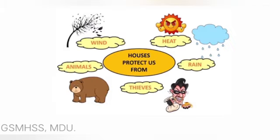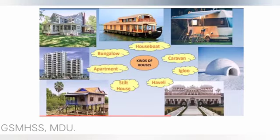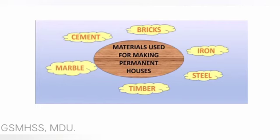Okay students, recall. A house gives us shelter from heat, rain, cold, animals, and robbers. Different types of houses include: bungalow, houseboat, caravan, igloo, wood house, and tent house. Different types of materials used in houses include: brick, cement, marble, timber, iron, and steel. Keeping our surroundings clean will also keep them healthy.